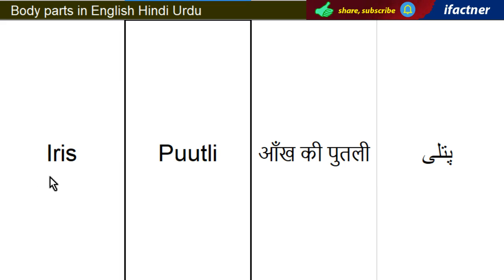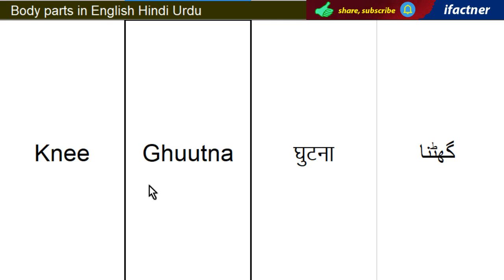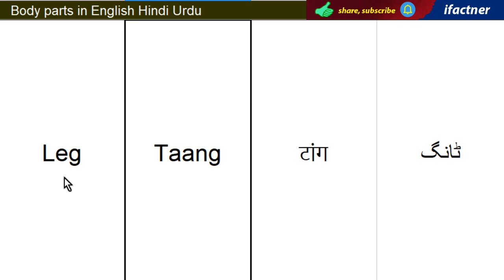Putli — Iris. Jabda — Jaw. Gutna — Knee. Poor Gaantha — Knuckle. Tango — Leg.